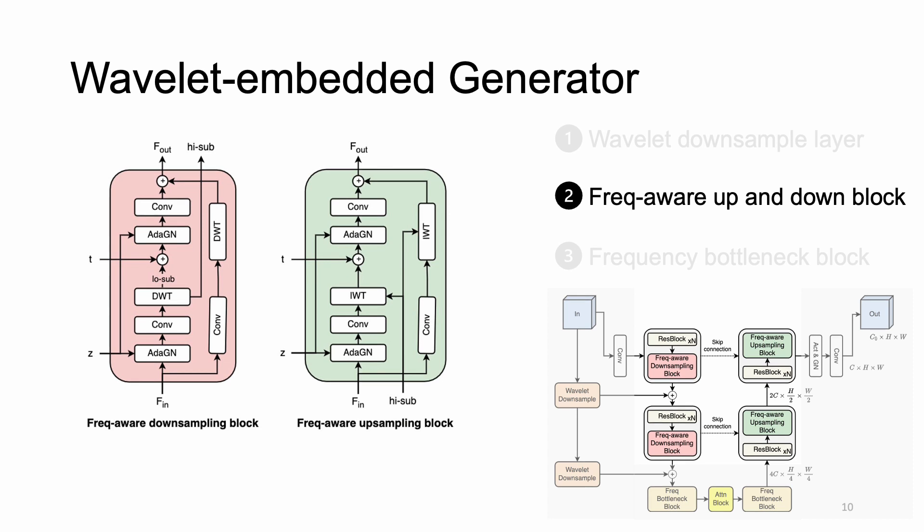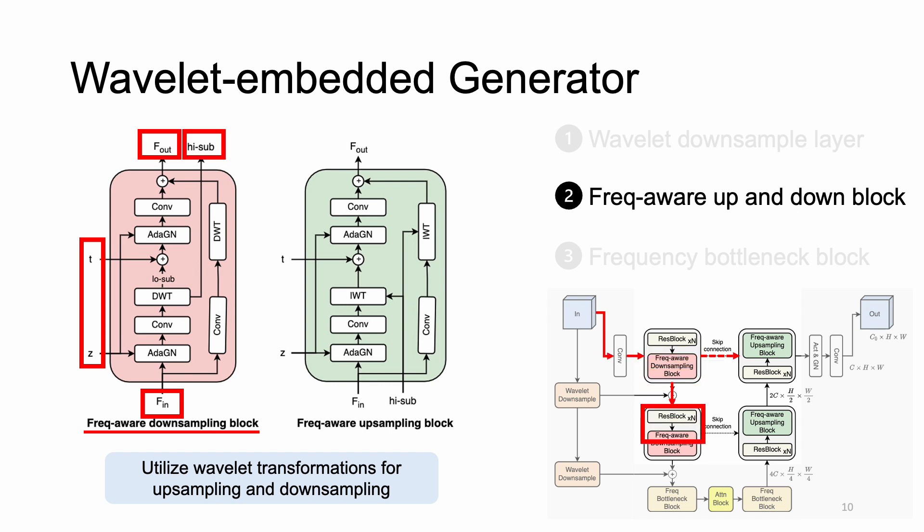Our next proposal is the frequency-aware downsampling and upsampling blocks. Instead of using conventional operations to resize feature dimensions, we utilize inherent properties of the wavelet transform for better upsampling and downsampling. Particularly, the downsampling block receives a tuple of input features F_I, a latent Z, and time embedding T, which are then processed through sequential layers to return downsampled features and high-frequency subbands. These returned subbands are used for upsampling features based on frequency cues in the upsampling block.